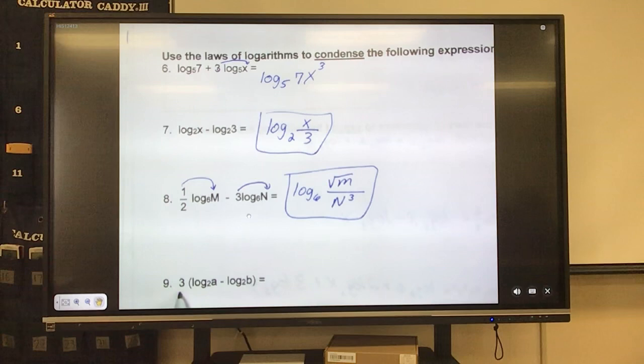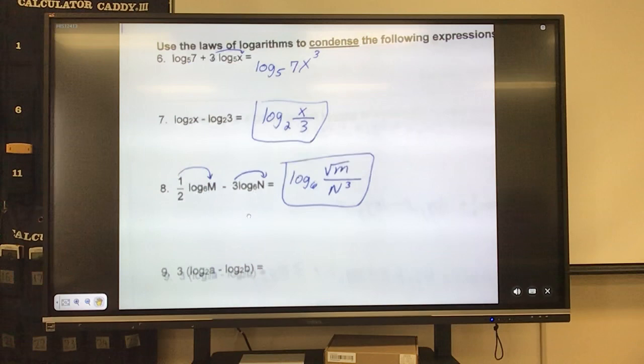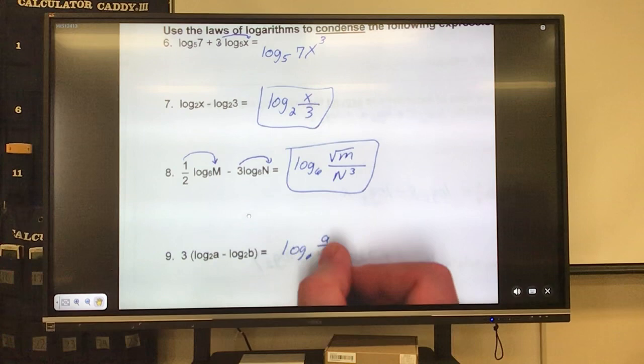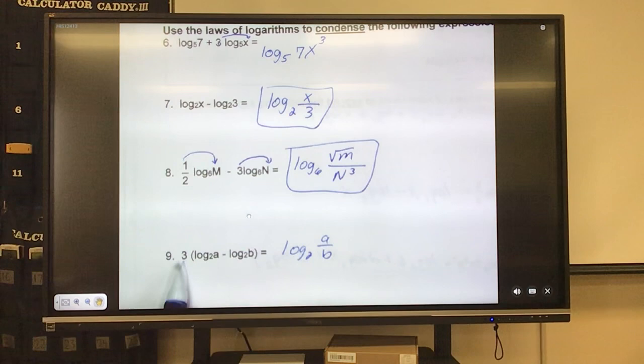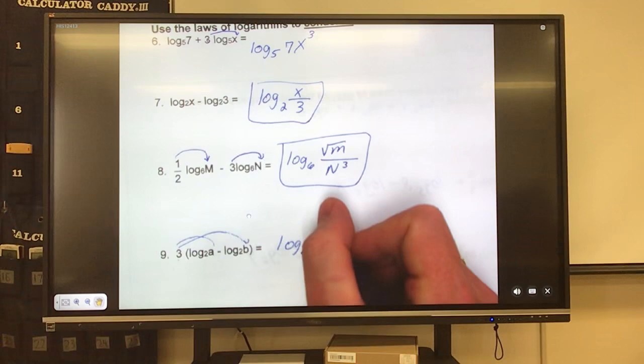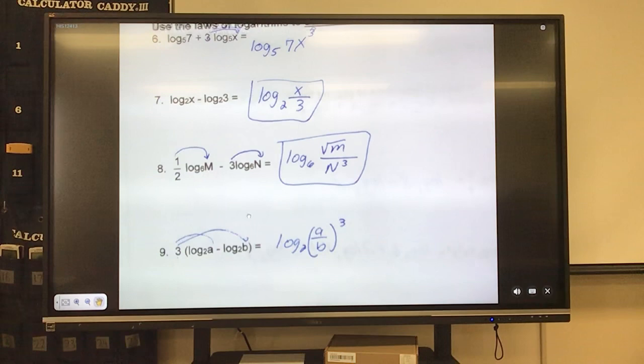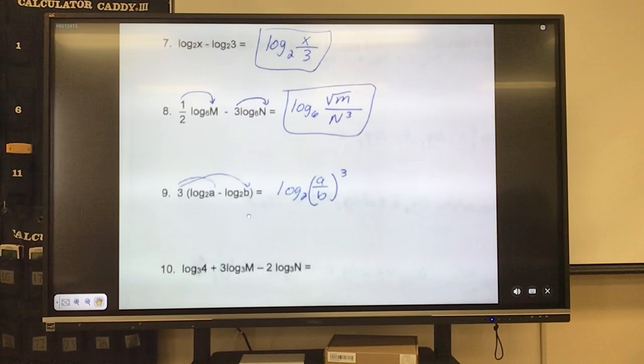This guy here has a 3 being multiplied times all of it. Whenever we have something multiplying times all of it, it goes with both of them. So inside we have log base 2 and subtraction, so we know it's a fraction, a over b. And because this is a 3 here, that means it has to go with each one of these guys as our exponents. We can do that with one fatal swoop by just doing that. Now you could have put log base 2, a to the third power over log base 2, b to the third power, it's the same thing, but why do that when we can condense it even more?